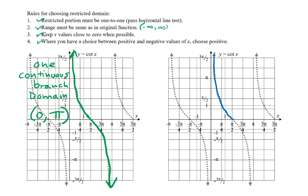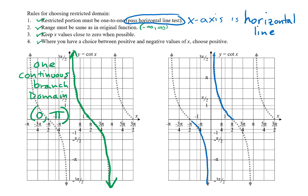On the right, in blue, we see a different way to restrict the domain of cotangent. This uses parts of two different branches. The restricted domain must produce a function that passes the horizontal line test. The x-axis is a horizontal line, so it must pass through the function only once. We can accomplish this by using only one of those two x-intercepts. Where we have a choice between positive and negative, we choose positive. So we include the x-intercept at positive pi over 2 and exclude the one at negative pi over 2. This gives us a function that is 1-to-1 and has the same range as the original. It uses a discontinuous restricted domain from negative pi over 2 to zero and from zero to positive pi over 2.